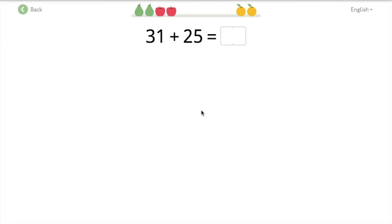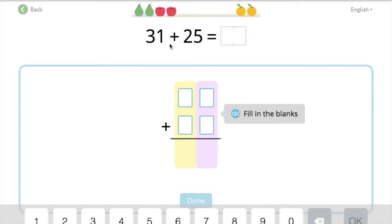Let's do another one. 31 plus 25 equals blank. Fill in the blanks. Okay, so here's our number sentence. Let's make it the vertical way.